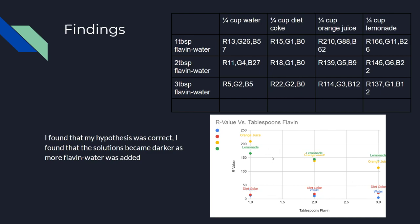Off in the bottom right, you can see a graph I've made graphing the R value versus tablespoons of flavin water. Orange is orange juice, green is lemonade, red is Diet Coke, and blue is water. As you can see with orange juice, lemonade, and water, as more flavin water is added, they get darker. However, with Diet Coke, the R value increases and the solution got a little bit brighter.